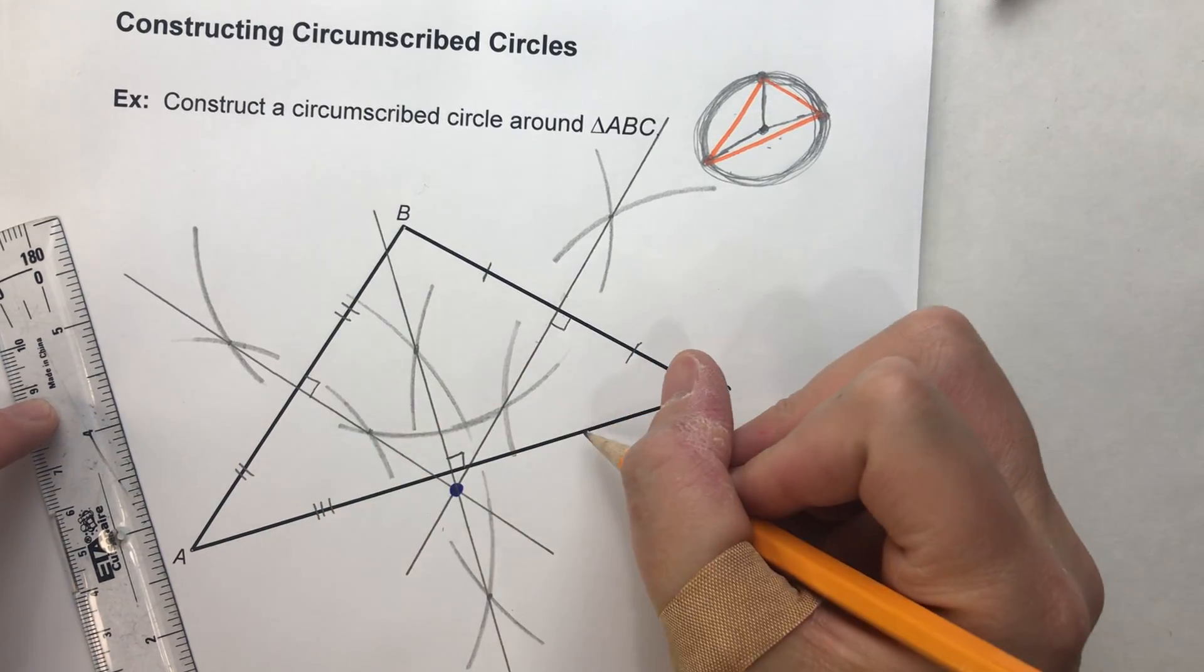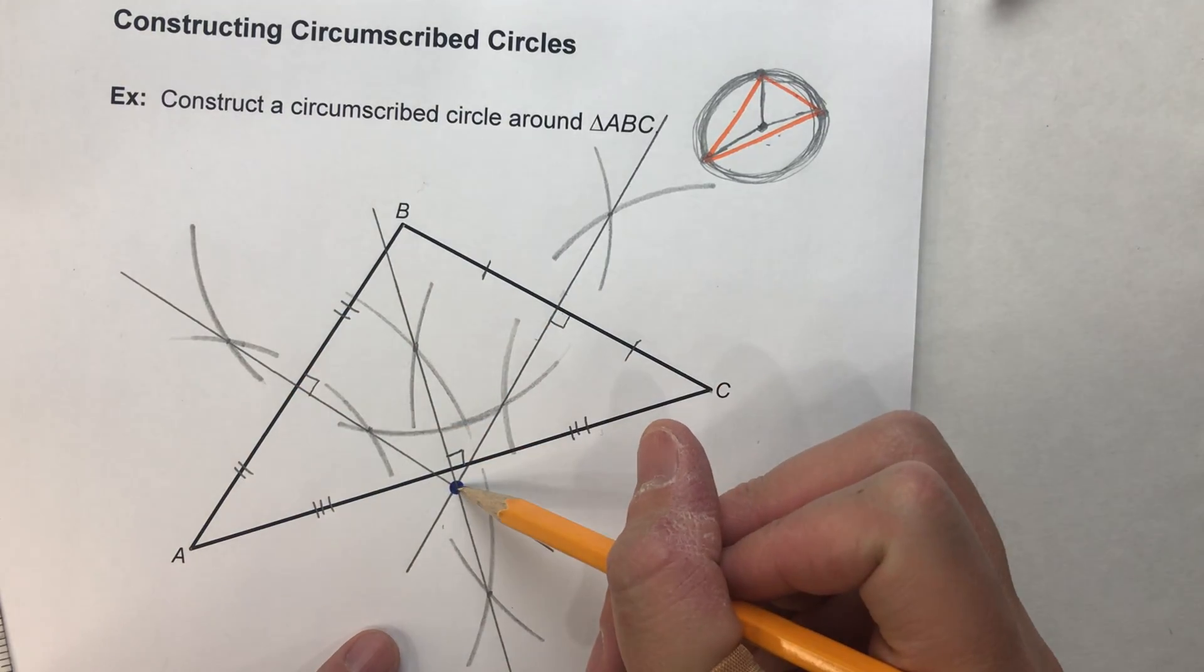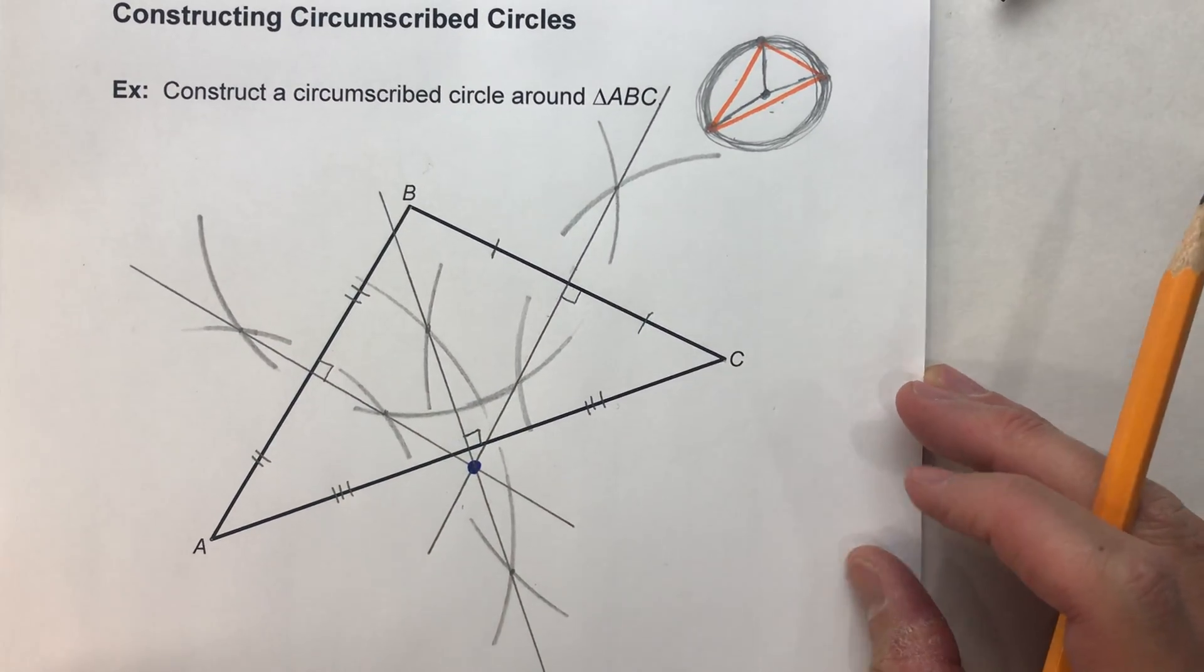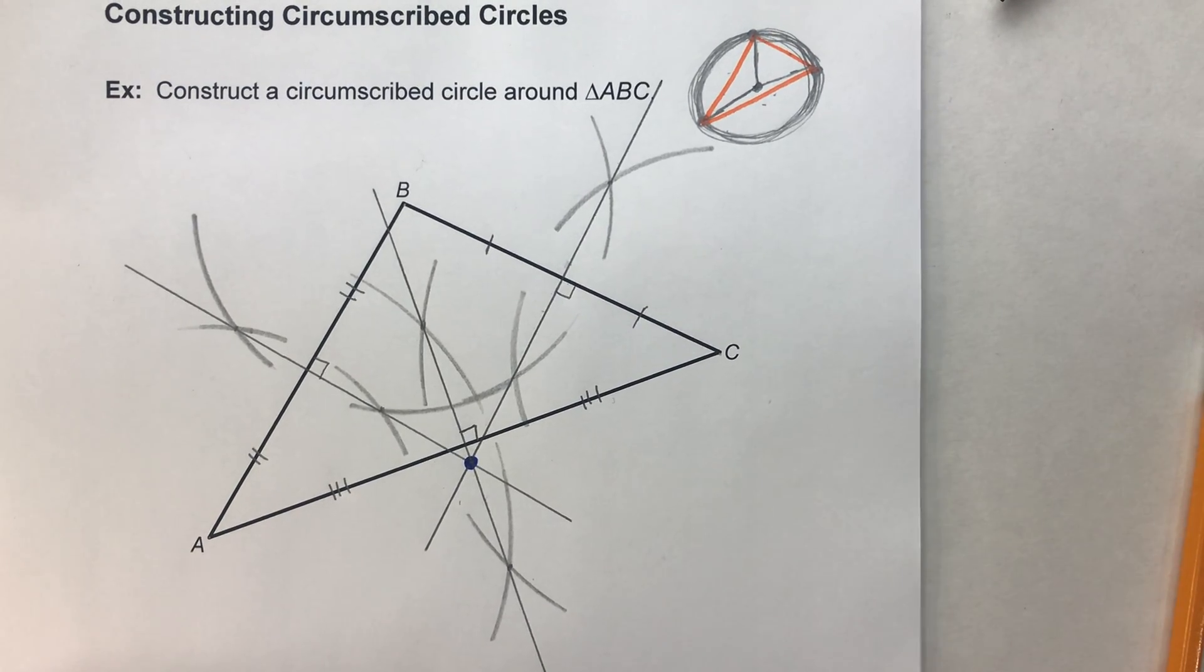Perpendicular bisector. And look at that. All three perpendicular bisectors go exactly through this point right here. That is my circumcenter, and that's going to be the center of my circumscribed circle.